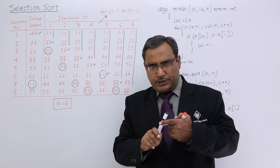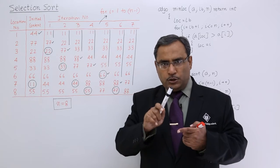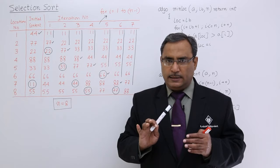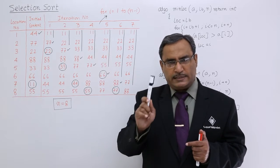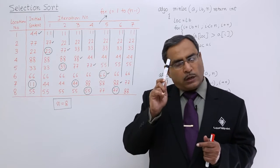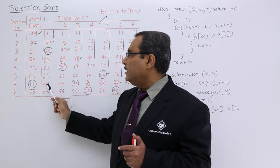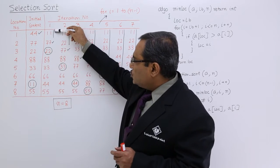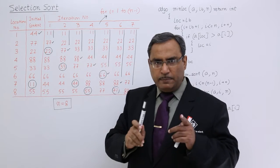That means first I am searching the position of the minimum number within the range 1 to n. I am finding it at the loc position. If loc is not equal to 1, that means the minimum number is not at the first place. So whatever data we are having at location number 1 — here it is 44 — will be swapped with 11. So now they have got swapped, and this array has been sorted up to this limit because the minimum number is at the minimum place number.